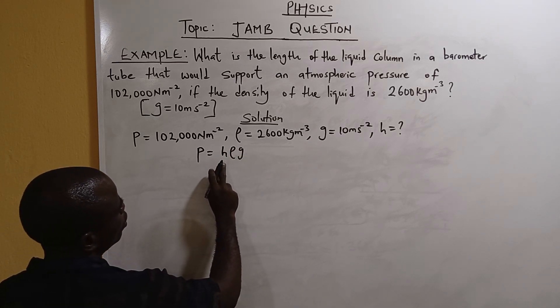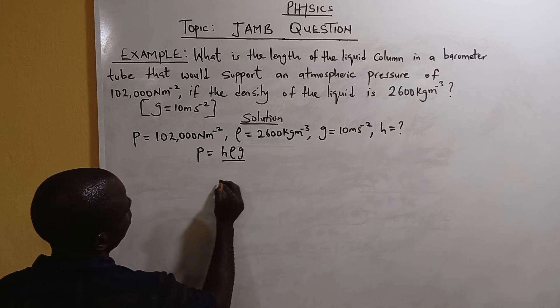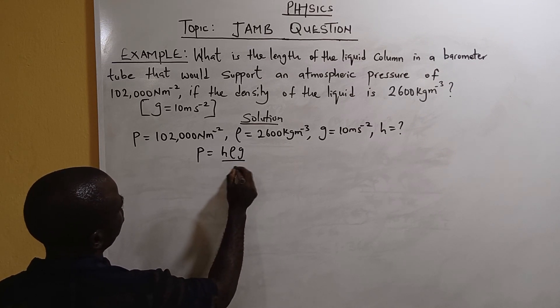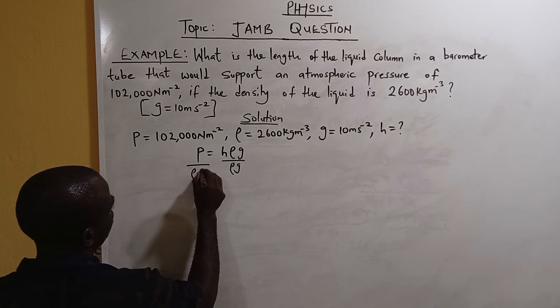And we are looking for height, which is the length of the barometer. So h equals P divided by rho g.